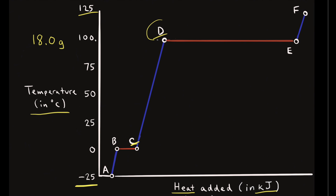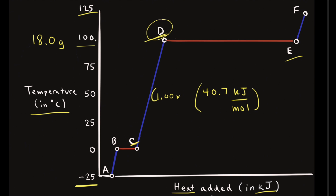Once we reach point D, we're at the boiling point of water. The heat added now goes into turning liquid water into gaseous water — going from point D to point E, a phase change. We need the heat of vaporization of water, which is 40.7 kilojoules per mole. We have 1.00 mole, so 1 mole × 40.7 kJ/mol — moles cancel — and it takes 40.7 kilojoules to convert the liquid water into steam.